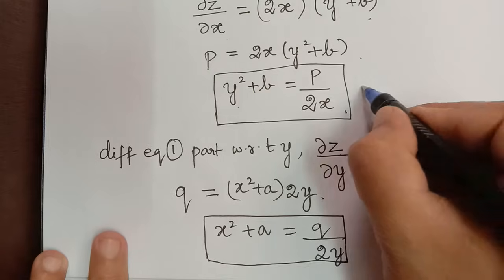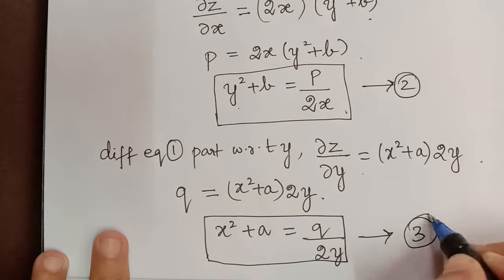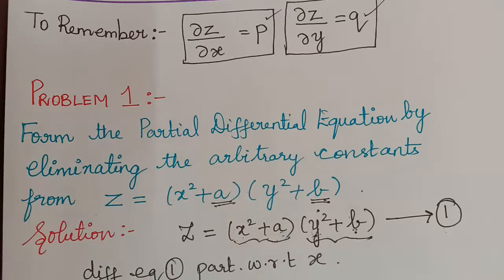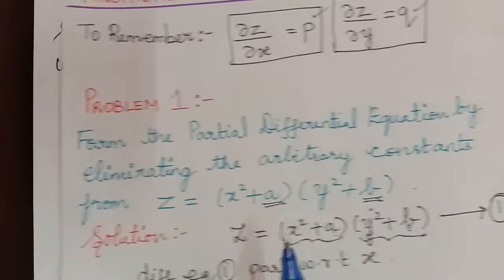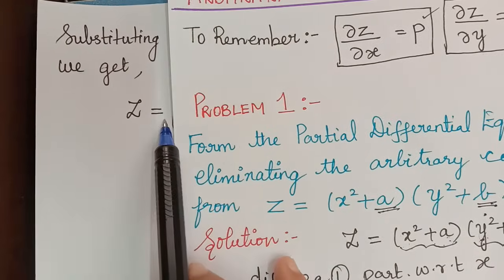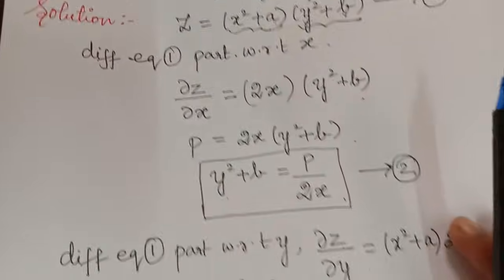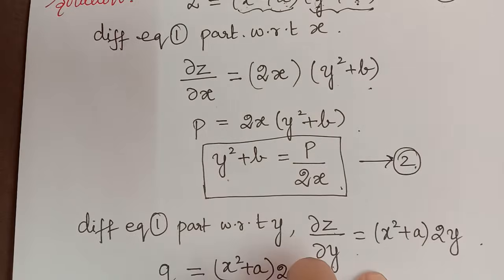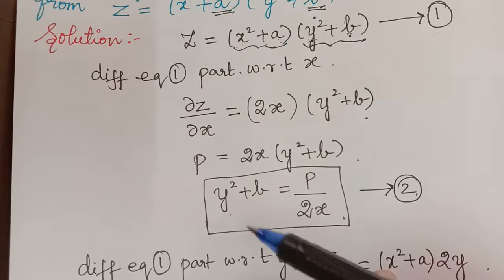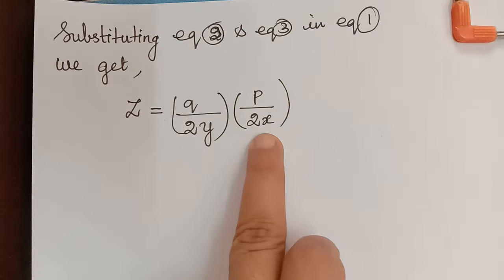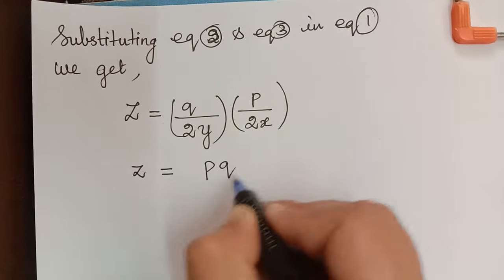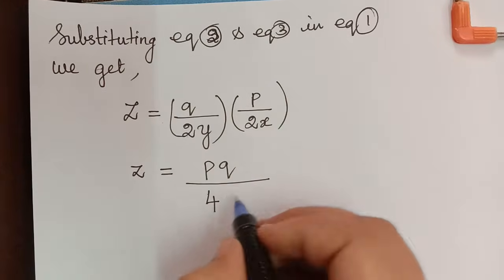We shall mark y² + b = p/(2x) as equation 2 and x² + a = q/(2y) as equation 3. Now we substitute equations 2 and 3 into equation 1. In equation 1, z = (x² + a)(y² + b). Replacing x² + a with q/(2y) and y² + b with p/(2x), we get z = [q/(2y)] · [p/(2x)], which simplifies to z = pq / (4xy).